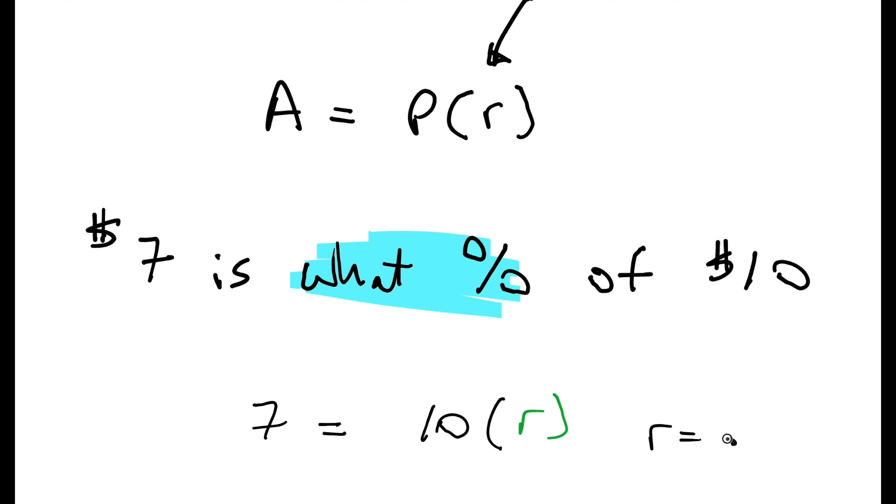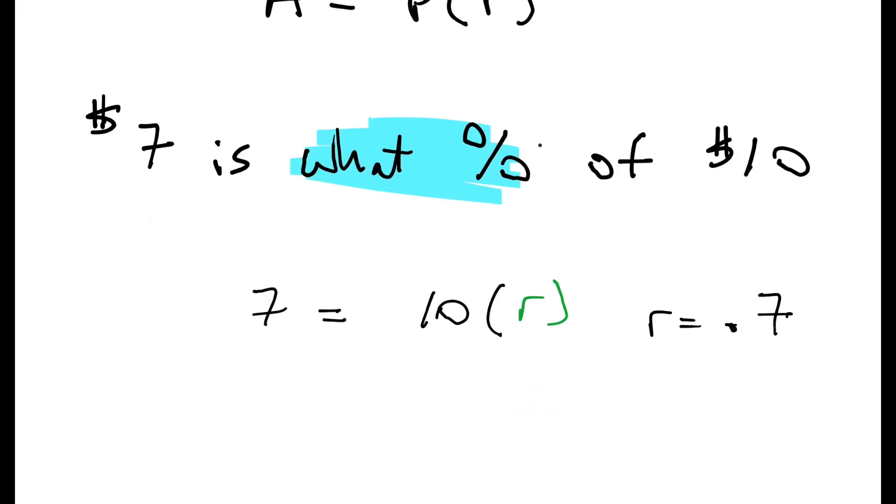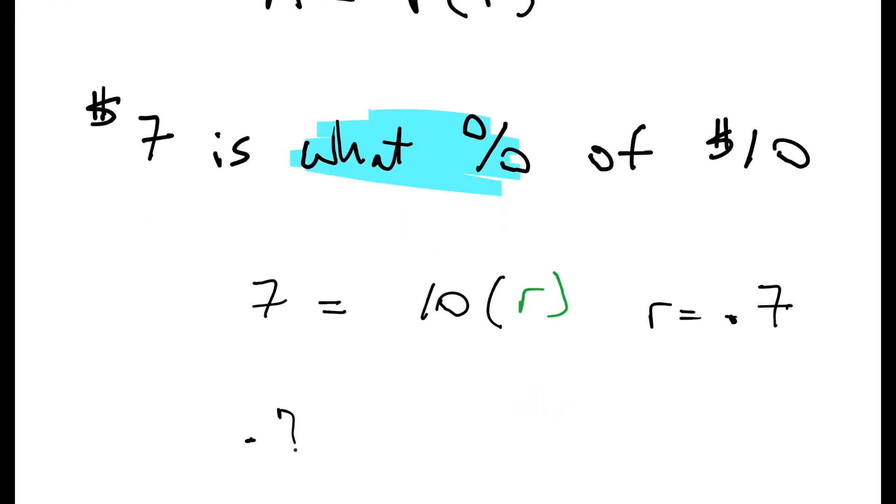All right. Well, at least I know what to do for R. Do you know what to do for R for this problem? It's the rate. Right. So what should I put down? R. Because that's what we're looking for, right? What percent? So it's 7 equals 10 parentheses R, divide by 10, divide by 10. Oh, and that's 0.7, and then you want it so that it's 7 percent.